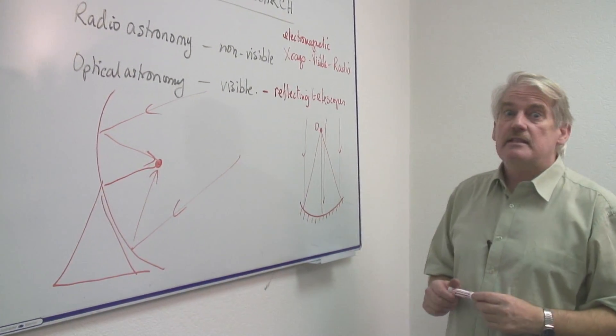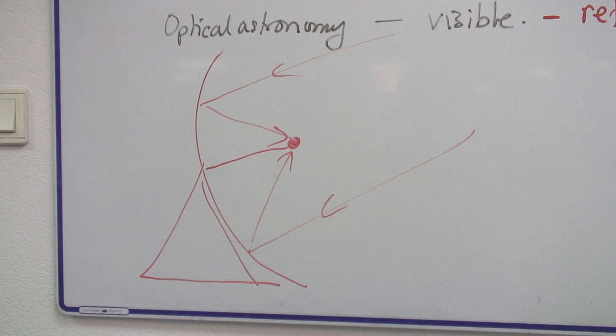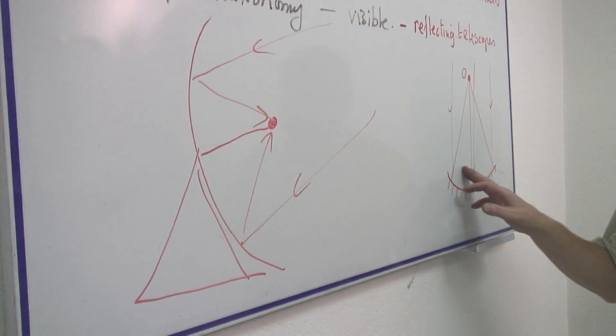The radio telescope however tends to be much bigger. This could be 50 metres in diameter. Whereas this is only 5 or 6 metres in diameter.